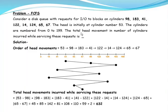We have to find the total number of head movements resulting from servicing these requests. To compute this, we first write down the order of head movements. Since this is an FCFS algorithm, we process requests in the order they arrive in the disk queue. Initially the head is at 53, so we start from 53.